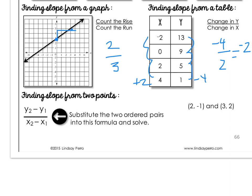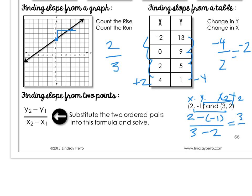To find slope from two points, use the formula change in Y over change in X, substitute in the two ordered pairs, and solve. In this scenario, I'll call (2, −1) X1, Y1 and the other point X2, Y2. My change in Y is 2 minus negative 1, and my change in X is 3 minus 2. So 2 minus negative 1 is 2 plus 1, which equals 3, and 3 minus 2 is 1, giving a slope of 3. Alright, that's just a little review.